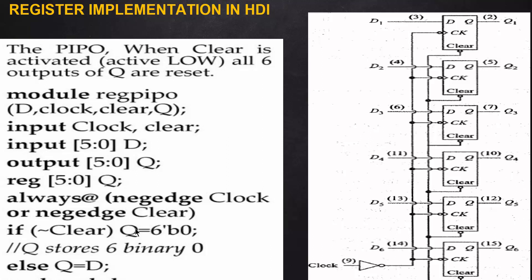All six bits of the q array — q1, q2, q3, q4, q5, and q6 — are initialized to zero. In the else part, when clear is not equal to zero (clear is inactive), the values from the input d array are assigned to all bits of q.